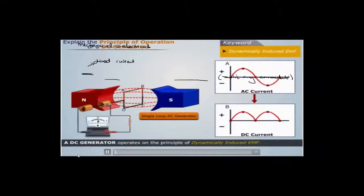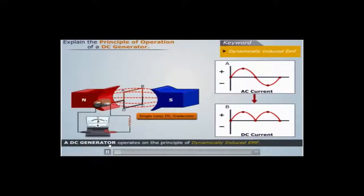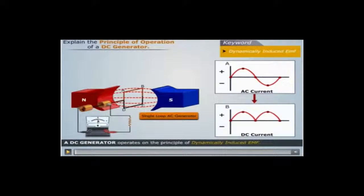First of all, do you see that there are two slip rings? One slip ring is connected to one side of the coil or armature, and the other slip ring is connected to the other side of the armature. The current is always going one direction in the external circuit — actually in opposite directions — but in the internal circuit, the current always goes in one direction.